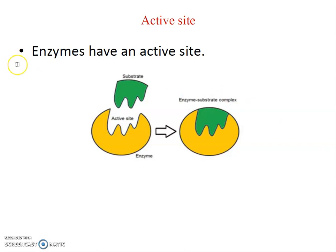The second important property of enzyme is that enzymes have an active site. Active site means there are special structures on the enzyme where the substrate binds, and that site is called the active site. Most enzymes have an active site, and this is an important property of enzyme.